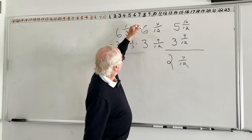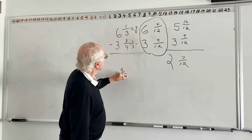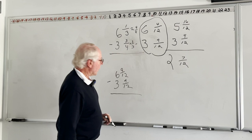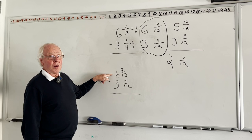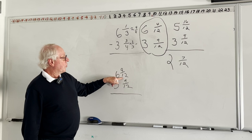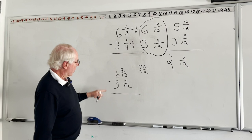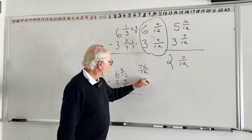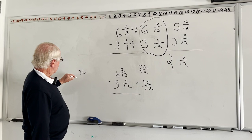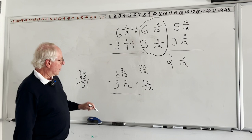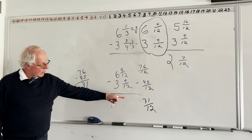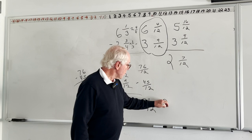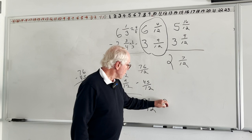Going back and using the improper fraction method instead: six times twelve is seventy-two, plus four is seventy-six twelfths. Three times twelve is thirty-six, plus nine is forty-five twelfths. Seventy-six minus forty-five: six minus five is one, seven minus four is three — thirty-one twelfths. Twelve goes into thirty-one two times, two times twelve is twenty-four, remainder seven. The answer is two and seven-twelfths — the same answer. These are the most difficult types of problems.